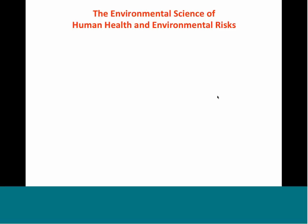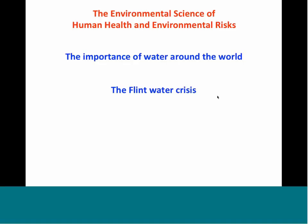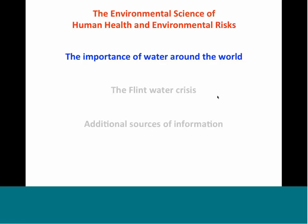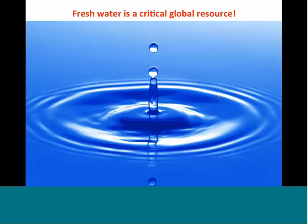So here's a brief outline of what we're looking at today. We want to talk briefly about the importance of water around the world. Then we'll segue into the Flint water crisis. And then we'll talk about some additional information you can find in either the first or second edition of the Friedman and Raleigh environmental science book for more information on these topics.